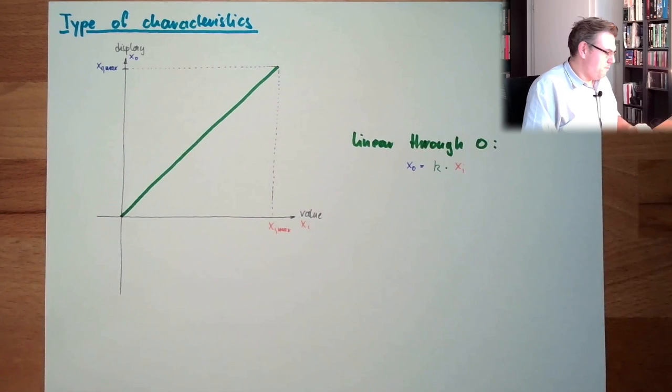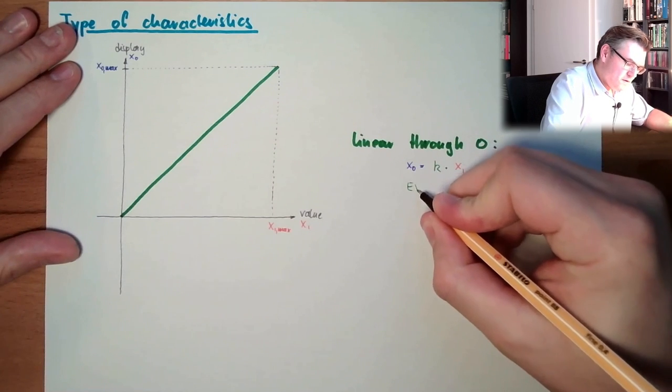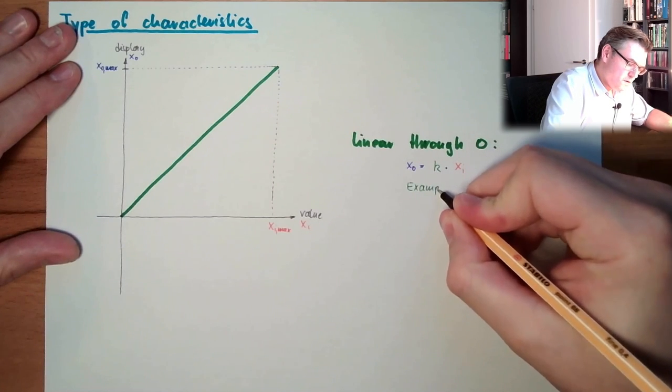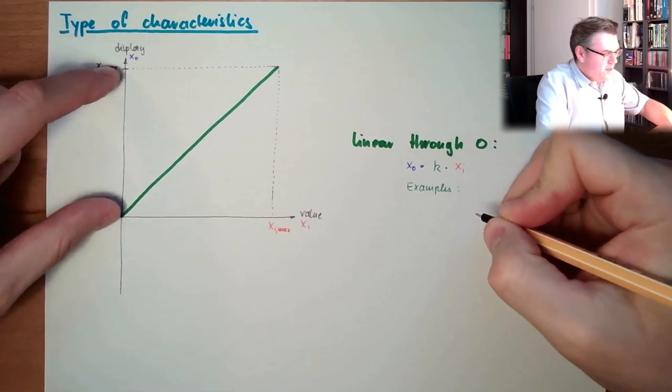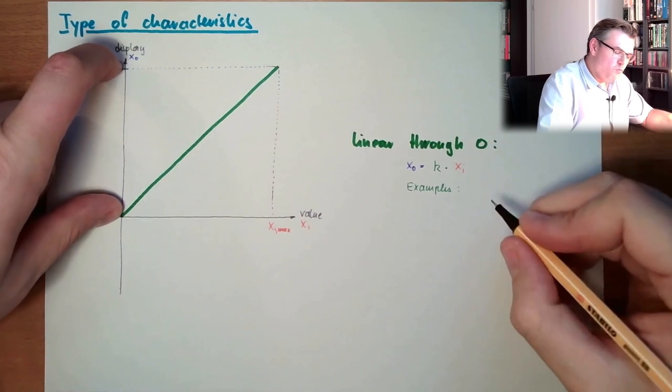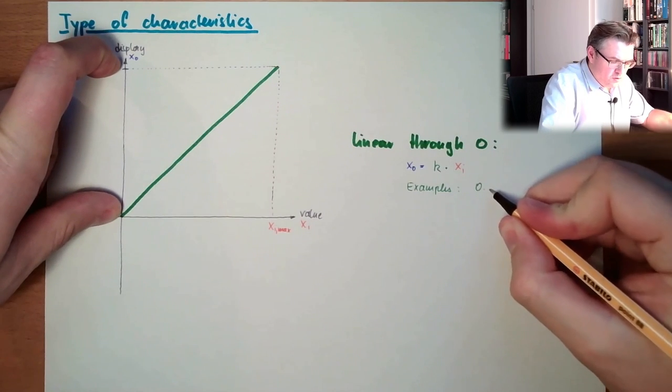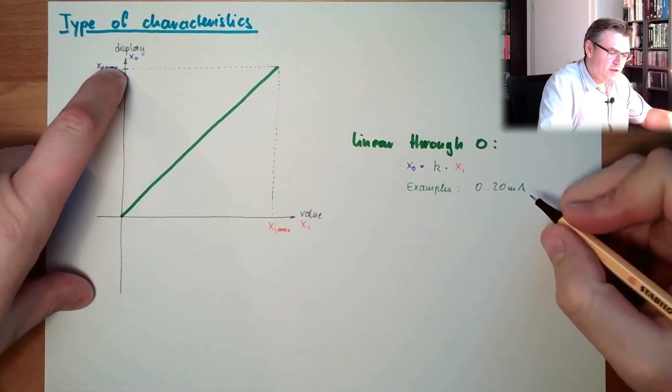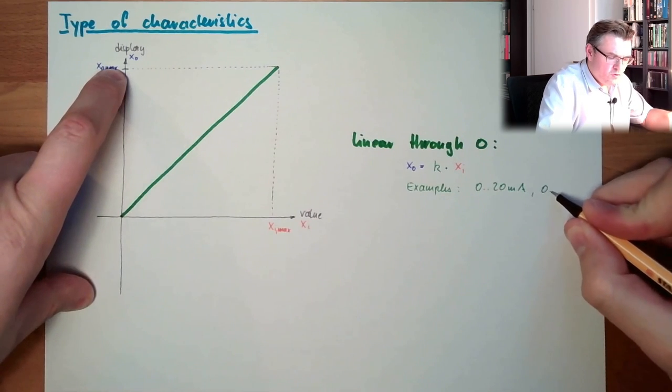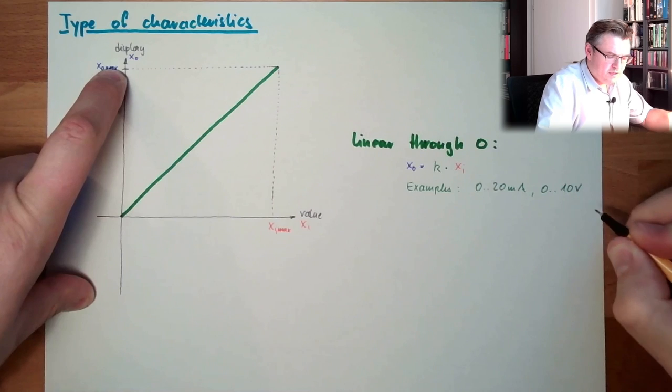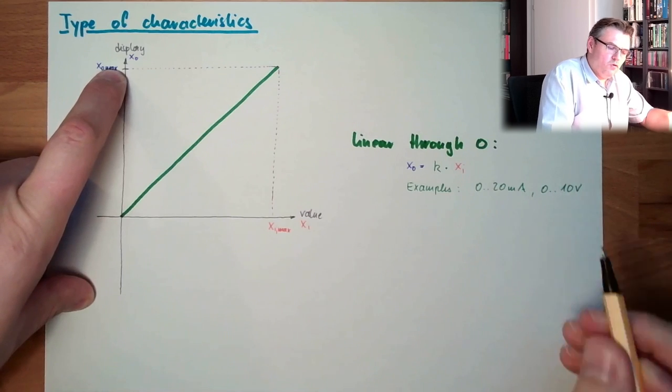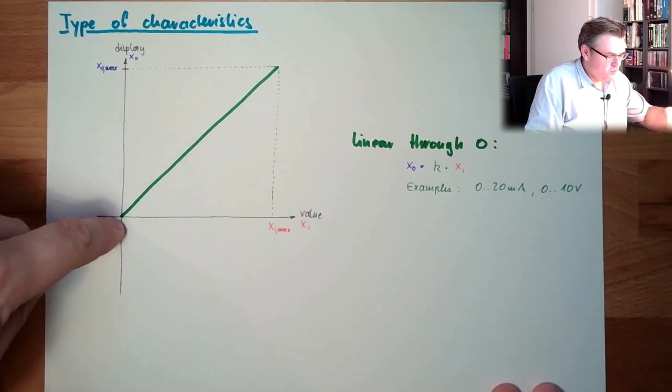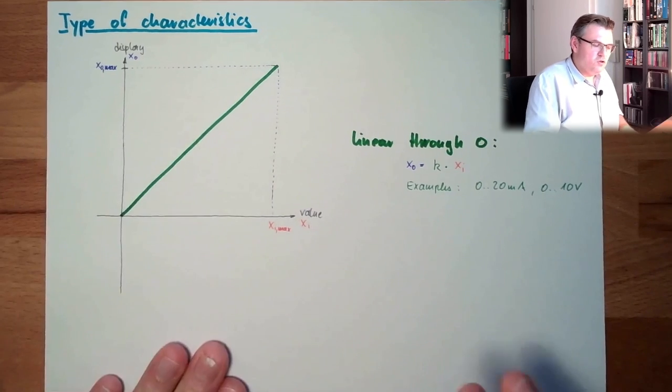Typical examples are, here, in the output range, would be, for instance, zero to 20 milliamps. So here's zero milliamps, here's 20 milliamps, or zero to 10 volts. If it's a current signal, voltage signal, zero to 10 volts, zero to 20 milliamps. These are typical examples.